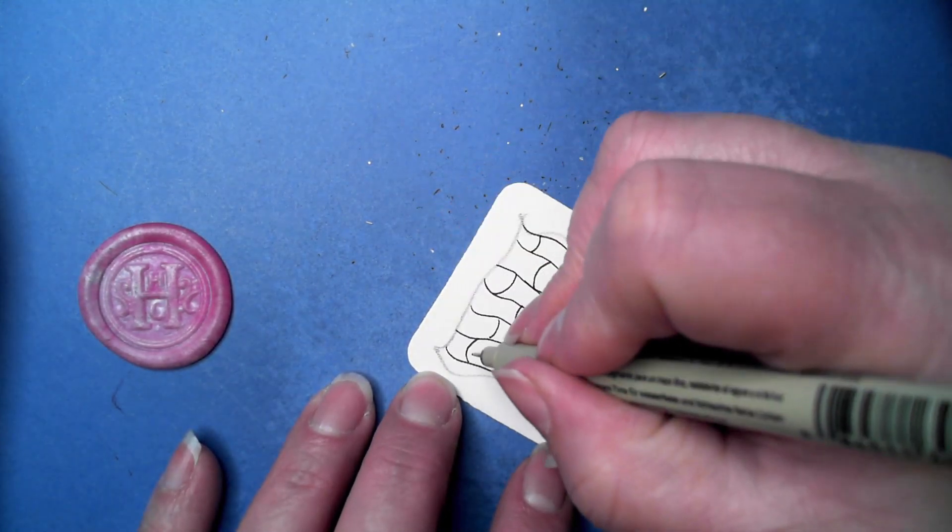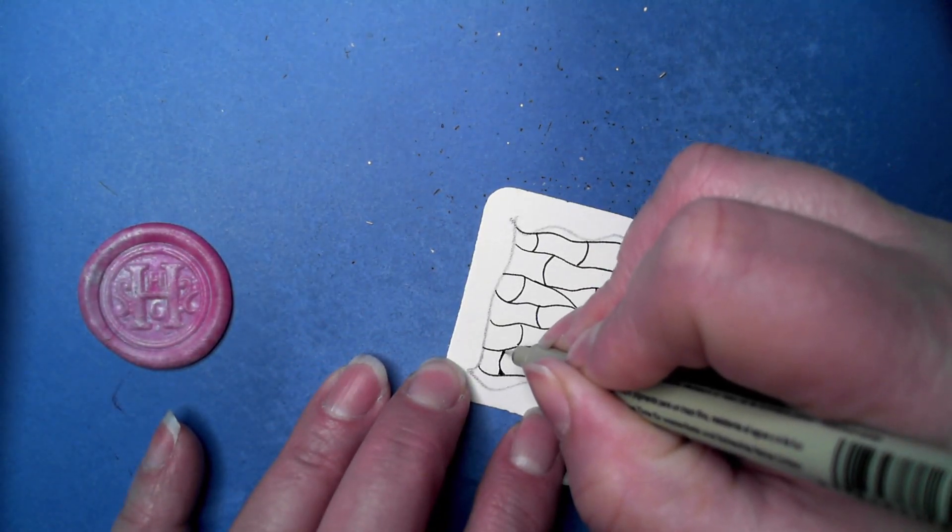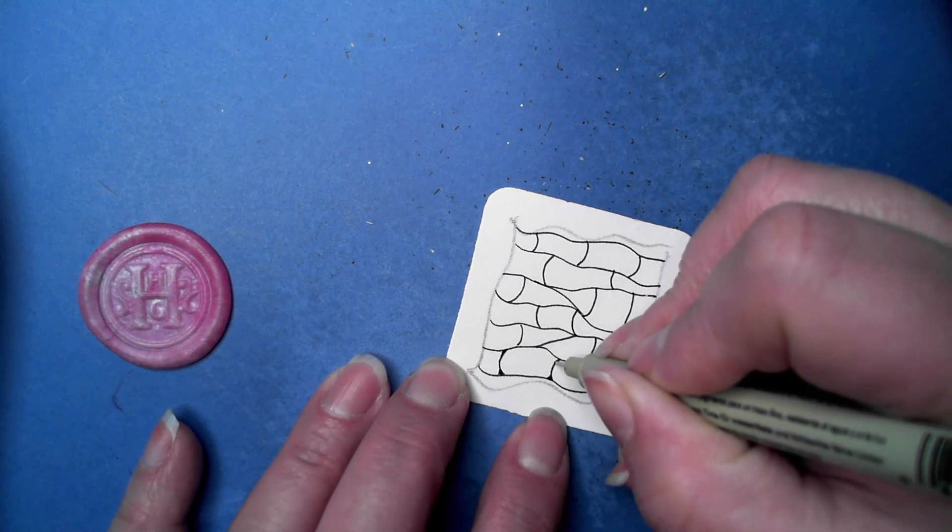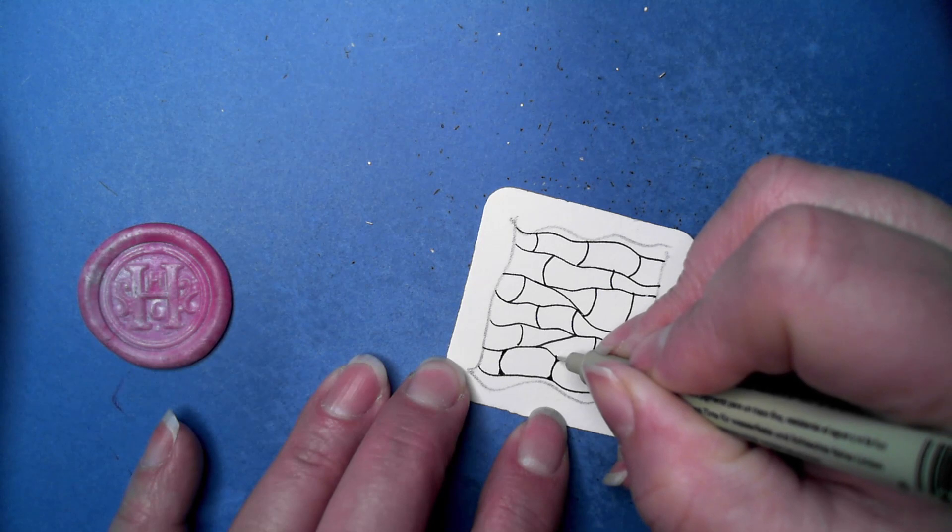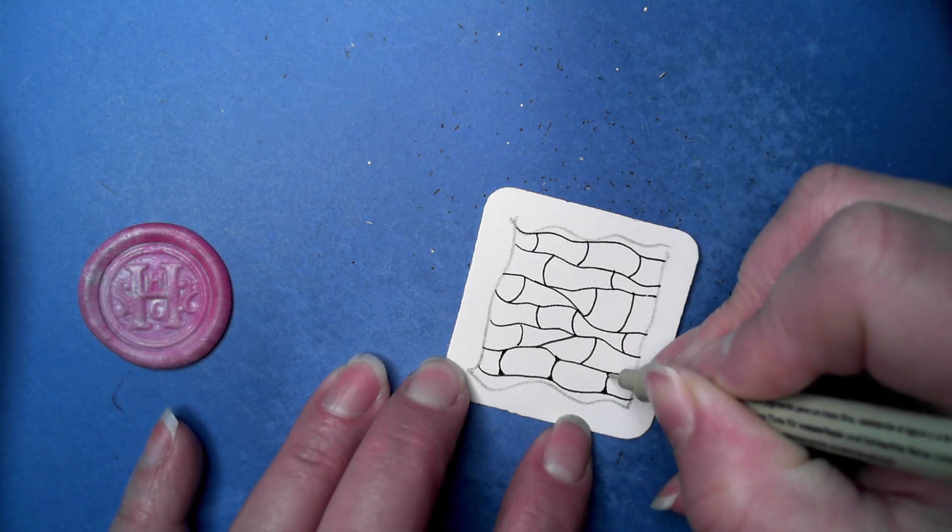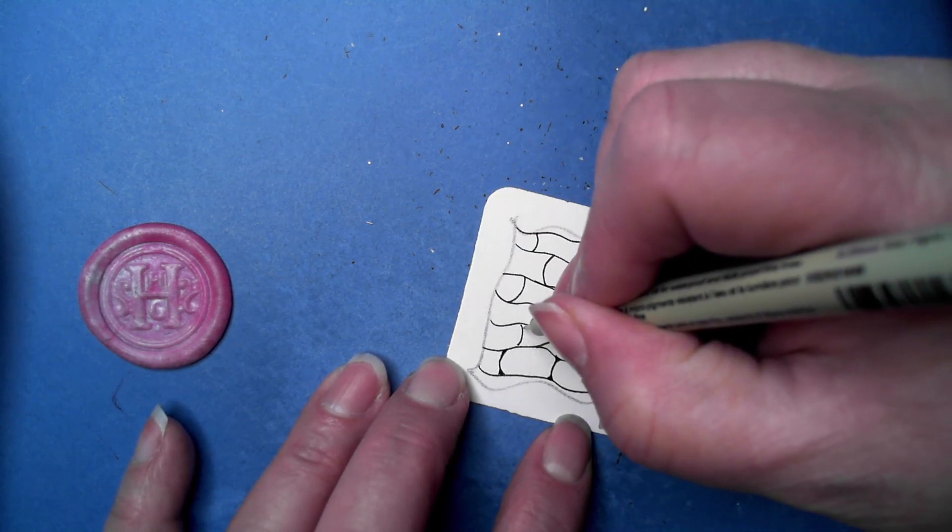Then we're going to do some rounding. I'm going to go the opposite direction. This is already pointing down, so I'm going to curve that little corner up.